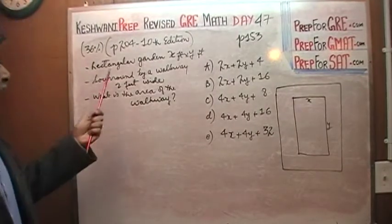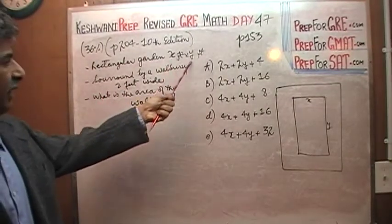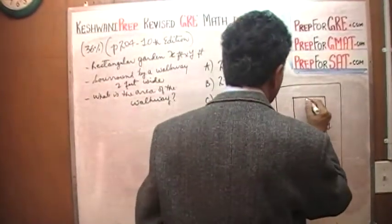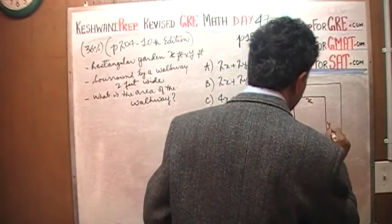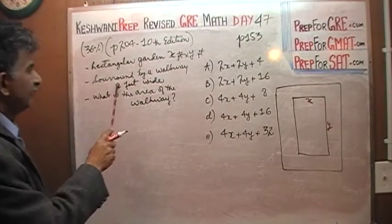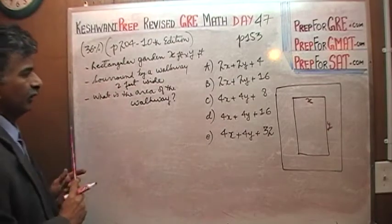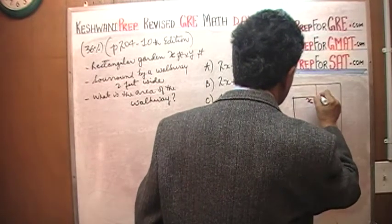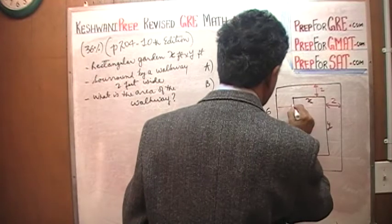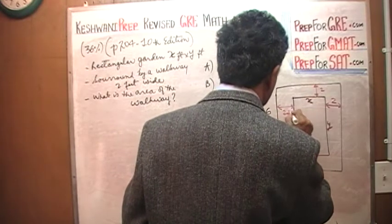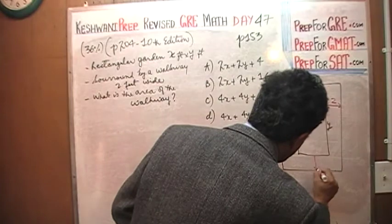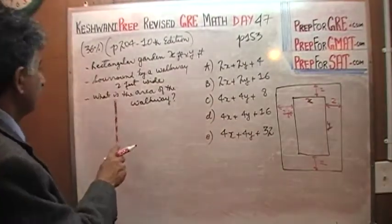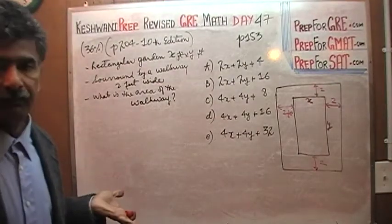Here's the question. We have a rectangular garden which is x feet by y feet. It is surrounded by a walkway which is two feet wide. From here to here is two feet; from here to here is two feet — everywhere it is surrounded by a walkway which is two feet wide.